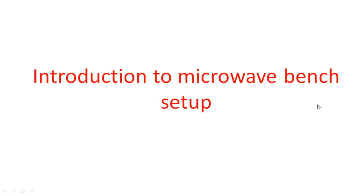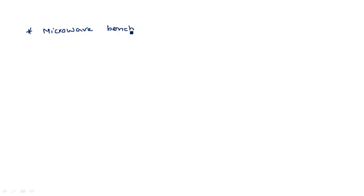In this video, I am going to introduce the bench setup at microwave — we call it the microwave bench setup. It is used to measure different parameters like VSWR, power, attenuation, waveguide wavelength, and impedance. The bench setup consists of all the components from source to load.